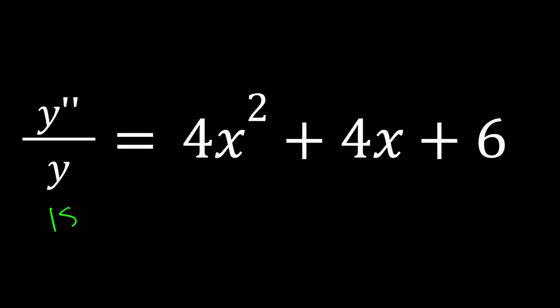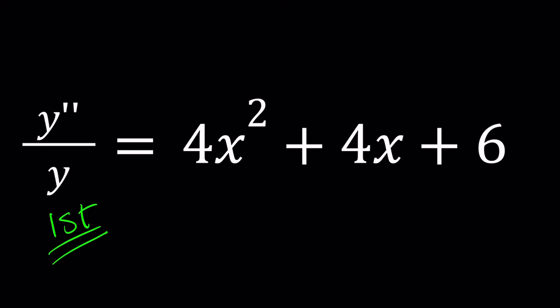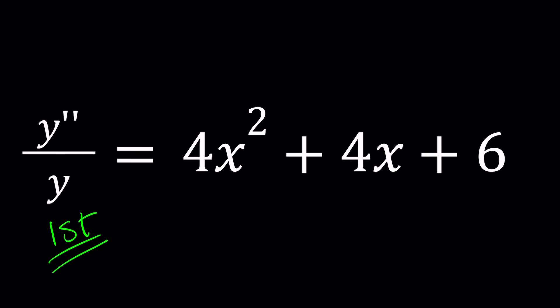First method. When you have an equation like this, I'm dividing the second derivative by the original function, I'm thinking maybe y is a polynomial. But what kind of polynomial can it be? Because the second derivative is going to reduce the degree by two, maybe it is a quartic polynomial. So suppose y can be written as ax to the fourth power plus bx to the third, plus cx squared, plus dx, plus e, where a, b, c, d, e are real constants.